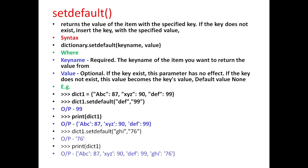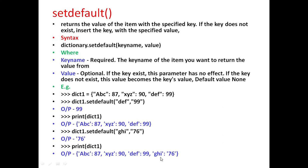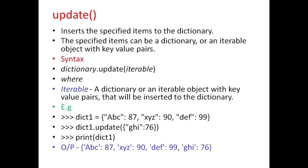For example, if dictionary dict1 is defined with these elements and if we give the command dict1.setdefault('def', 99) it will give the output 99. And if we print dict1 again it will display keys and values from dict1. If we give the command dict1.setdefault('ghi', 76), the output will be 76 and when we print dict1 it will display the dictionary with 'ghi' and 76 inserted.